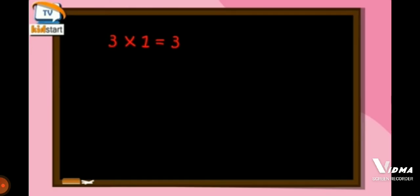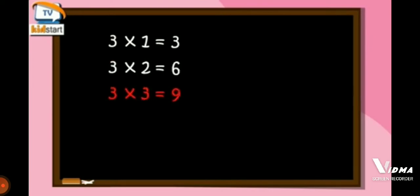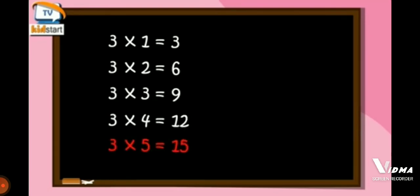Three ones are three. Three twos are six. Three threes are nine. Three fours are twenty-nine. Three fives are fifteen. Three sixes are eighteen.